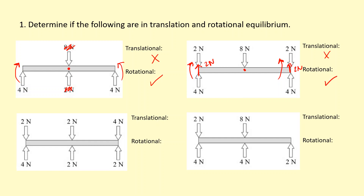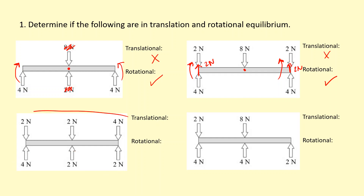In the third example, the total force upwards adds up to 8 newtons, and downwards also adds up to 8 newtons, so it is in translational equilibrium. For rotational equilibrium, considering moments about the center and ignoring the central forces, the resultant on one side is 2 newtons and on the other side is also 2 newtons — but both are causing the object to spin in a clockwise manner. So this is not in rotational equilibrium; there is a net moment.